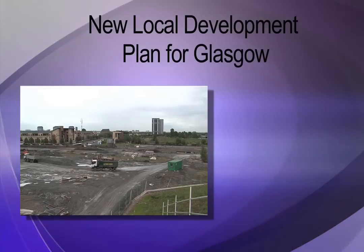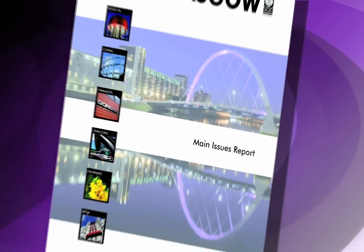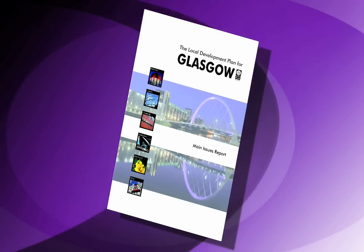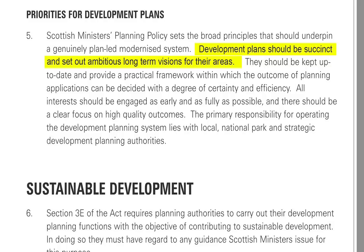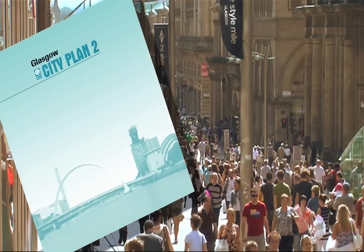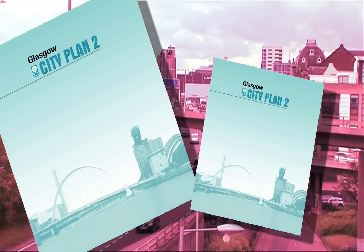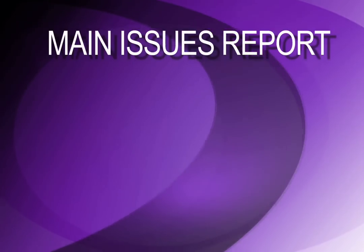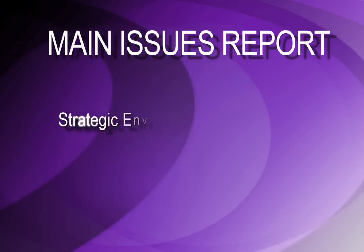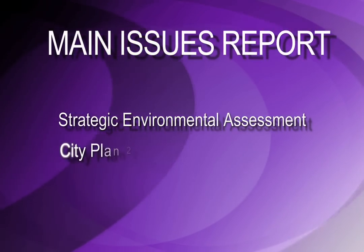A number of influences have shaped the form and content of the main issues report. The main issues report is itself a requirement of the new planning legislation in the form of the Planning Etc Scotland Act 2006. This legislation means that the way in which the new plan is produced will be quite different from that involved in producing City Plan 2. It also means that the new local development plan will be shorter and more map based. The main issues report is accompanied by, and has been influenced by, a strategic environmental assessment of its contents and a City Plan 2 monitoring report.